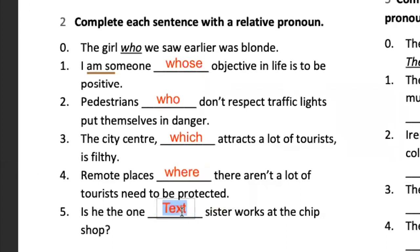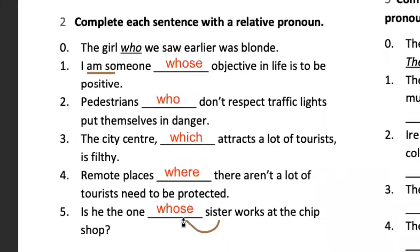'Is he the one whose sister works at the chip shop?' I'm talking about 'the one' — a person. How do you identify 'whose' instead? Because we are talking about the sister of that guy — possession. The sister belongs to the guy, so 'whose.' Wonderful, thank you very much.